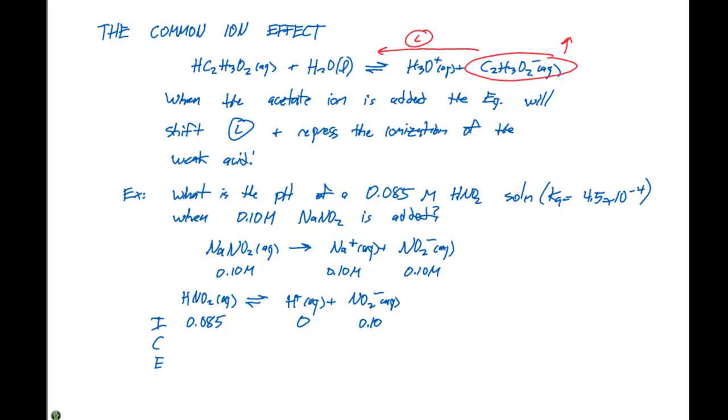As the equilibrium proceeds, the change in concentration of HNO2 is -X, H+ is +X, and NO2- is +X. This gives equilibrium concentrations of 0.085 - X, X, and 0.10 + X.